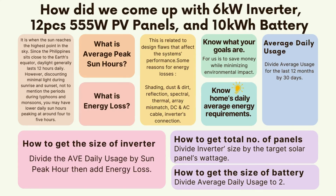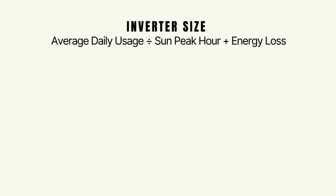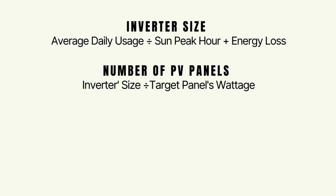Even though we have different needs and purposes for installing solar panels, the formula I'm going to share is the most practical and conservative way, at least for us. Just to put it briefly, here is the formula. For the inverter size: average daily usage divided by sun peak hour, then add energy loss. For the number of PV panels: inverter size divided by the wattage of your target panels.